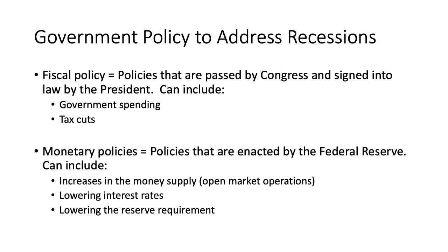Governments have a set of policy tools that they can use to help mitigate the negative effects of a recession. There are two types of policies: fiscal policy and monetary policy. Fiscal policies are voted on by Congress and signed by the President. They include various types of government spending and tax cuts. Monetary policies are implemented by the Federal Reserve. They include increasing the money supply, lowering interest rates, and lowering reserve requirements on banks. The Fed has actually implemented all three of these types of policies in just the past week.